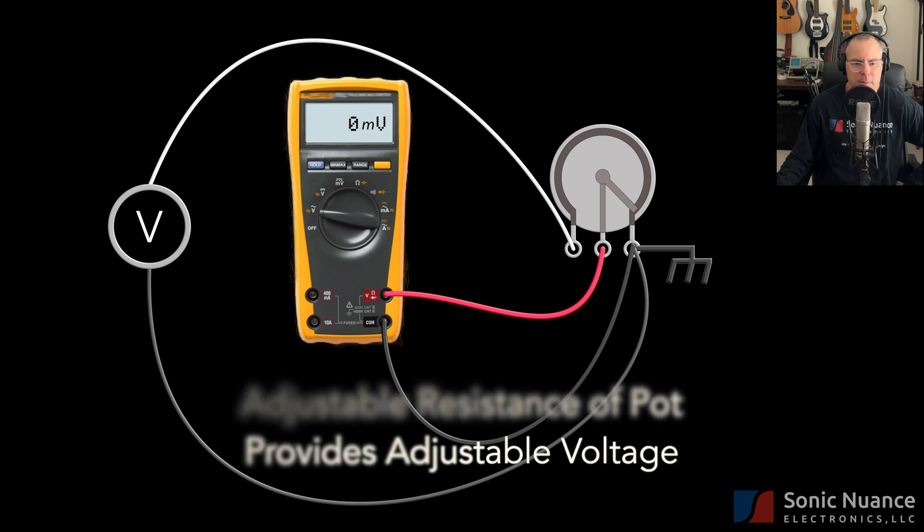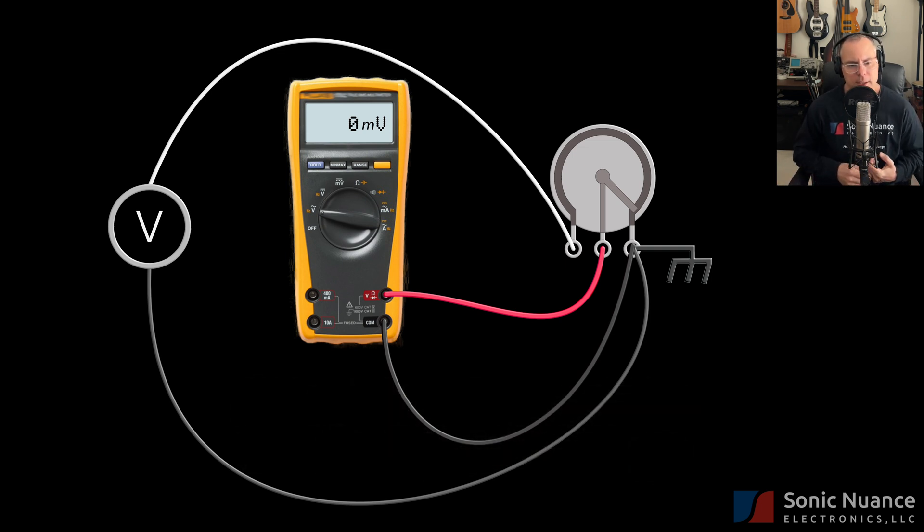For our example here, we're going to keep things simple and say this is a 250 millivolt voltage source. It's actually an AC voltage source. Don't worry too much about what that means. It's just a type of voltage, meaning that it moves with time. Now, let's see what happens as we move the shaft.